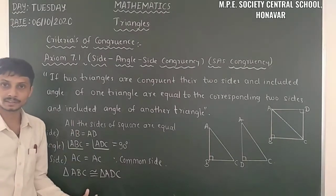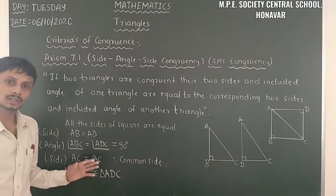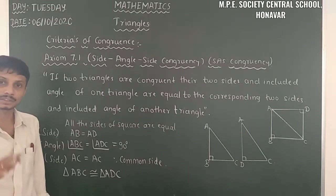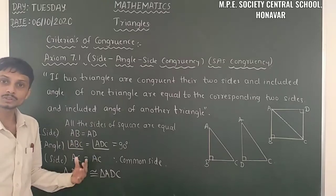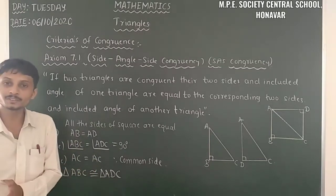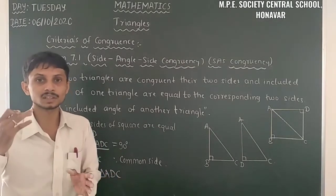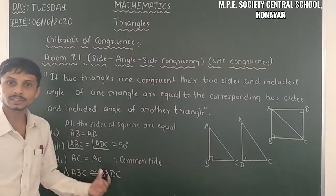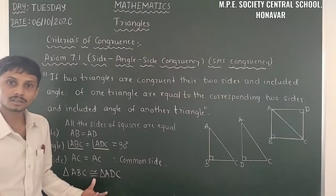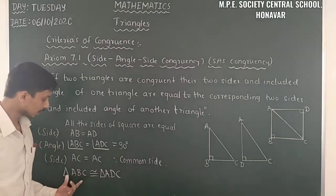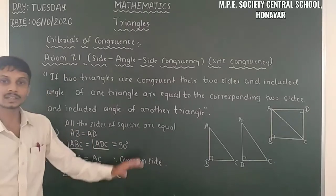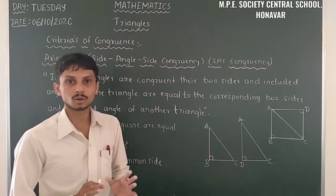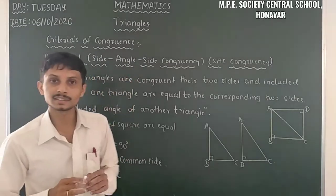This congruency sign shows complete equality — both triangles are equal. Note that similarity is different from congruency: similarity means sides are proportional and angles are equal, but in congruency all corresponding sides and corresponding angles are exactly equal. So all corresponding parts of congruent triangles are the same.